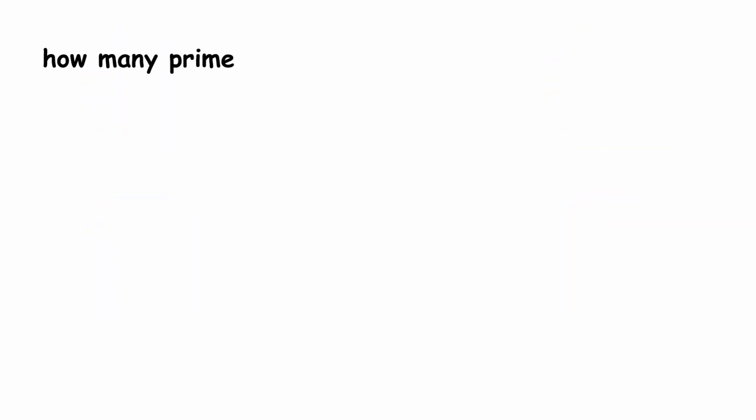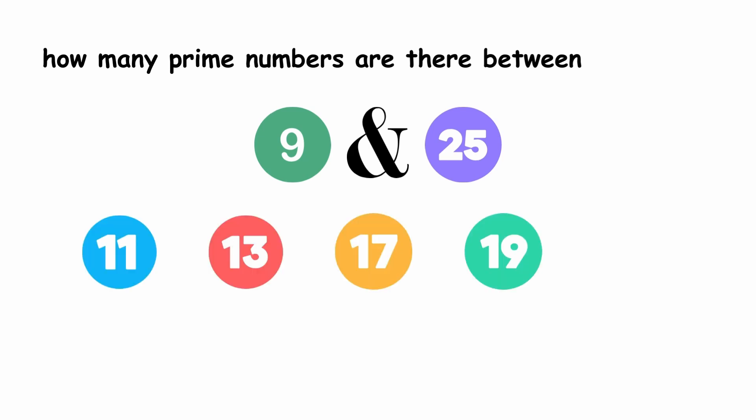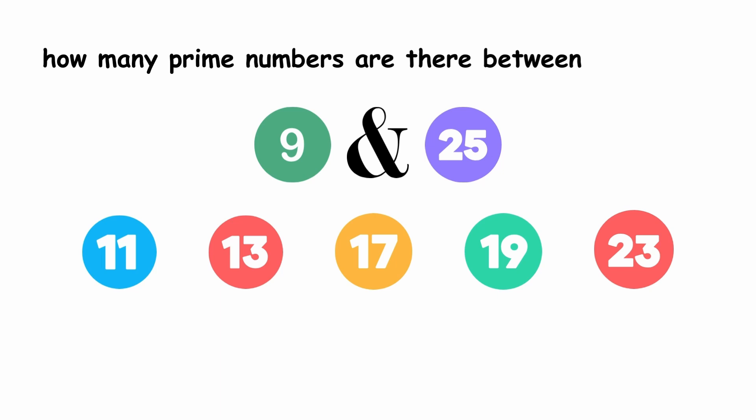Now, how many prime numbers are between 9 and 25? Those prime numbers are 11, 13, 17, 19, and 23. So our answer is 5.